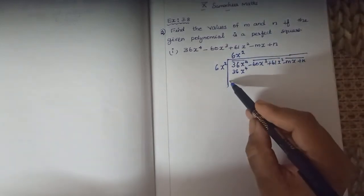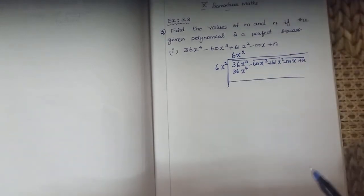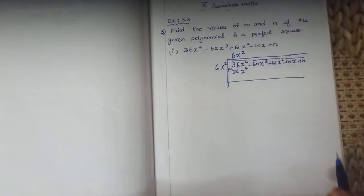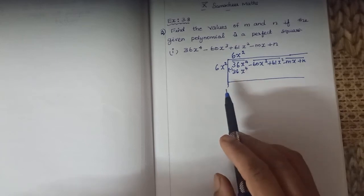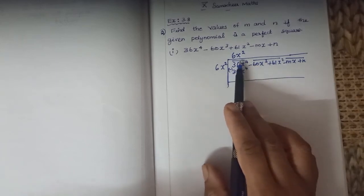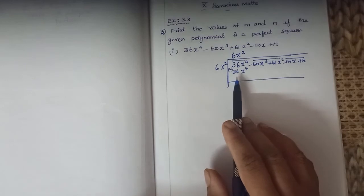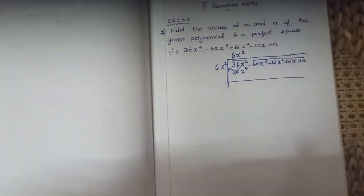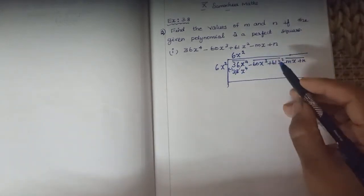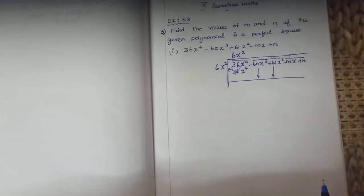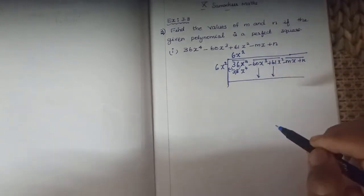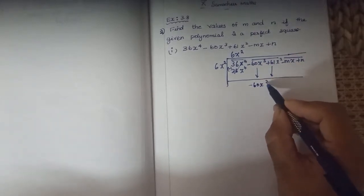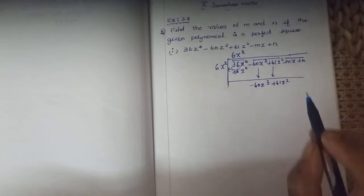The first term is cut off. In the normal division method you subtract by changing the sign. So 36x to the power 4 becomes minus 36x to the power 4, and it gets cancelled. Next, pair up and drop down these two terms: minus 60x cube plus 61x square.